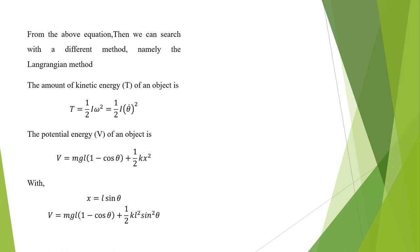From the above equation we can also use a different method, namely the Lagrangian method. The kinetic energy T equals (1/2) I omega squared, where I is the moment of inertia. The potential energy of the system includes the potential energy of the pendulum and the potential energy of the spring. The kinetic energy is affected by rotational motion because the pendulum does not have translational motion.